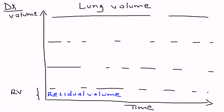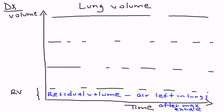The residual volume is essentially the amount of air that's left in your lungs when a person has exhaled as completely as possible — air left in the lungs after maximum exhale. After you've taken the maximum possible exhale, there's always some air left in the lungs. The next one is the ERV — the expiratory reserve volume.